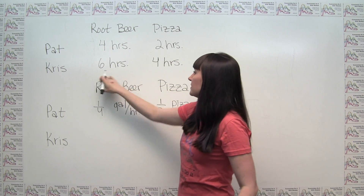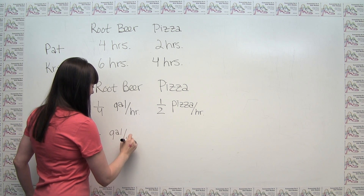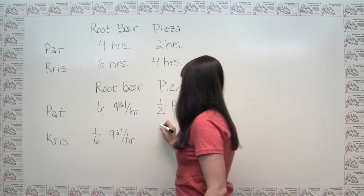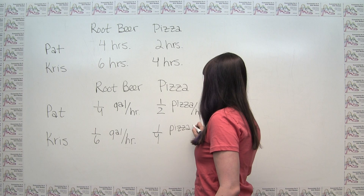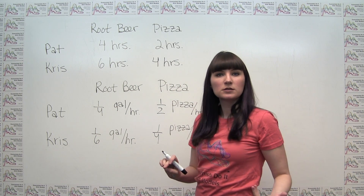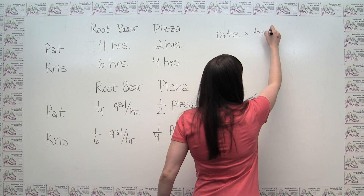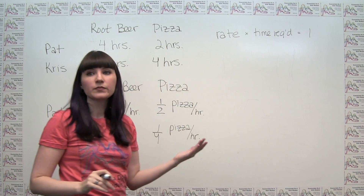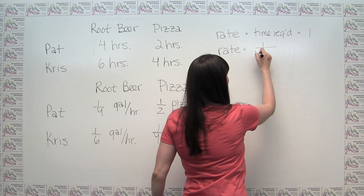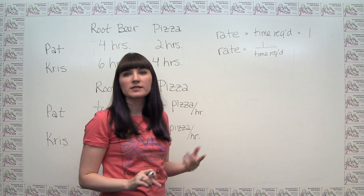If it takes Chris six hours to brew a gallon of root beer, his rate is one-sixth of a gallon per hour. And if it takes him four hours to make a pizza, his rate of making pizza is one-fourth of a pizza per hour. In general, you'll notice that the rates are just the reciprocals of the times — the rate is simply one divided by the time required to produce a given amount of output.